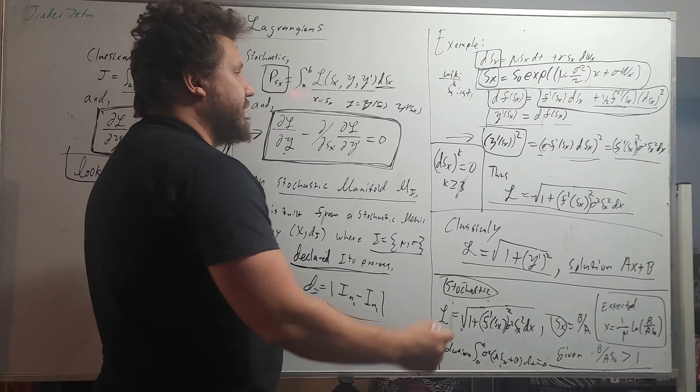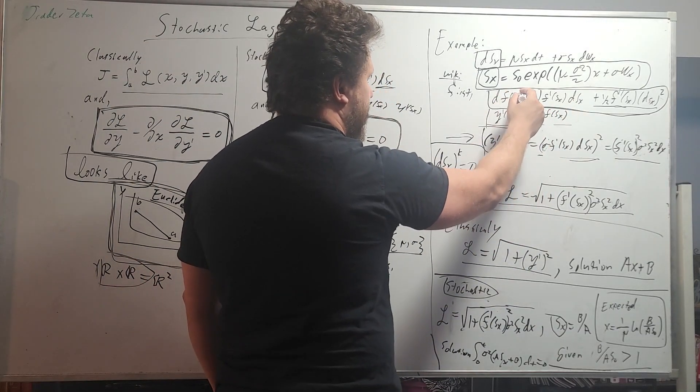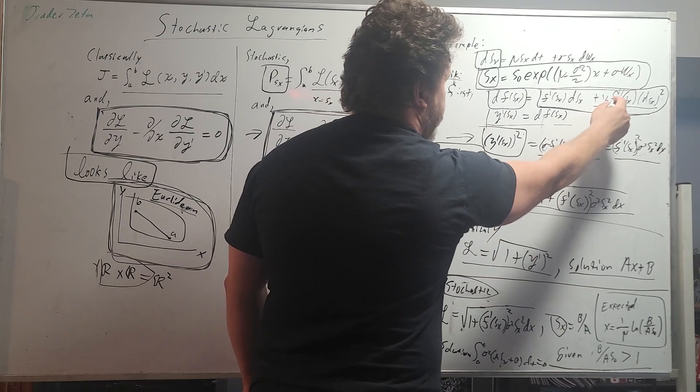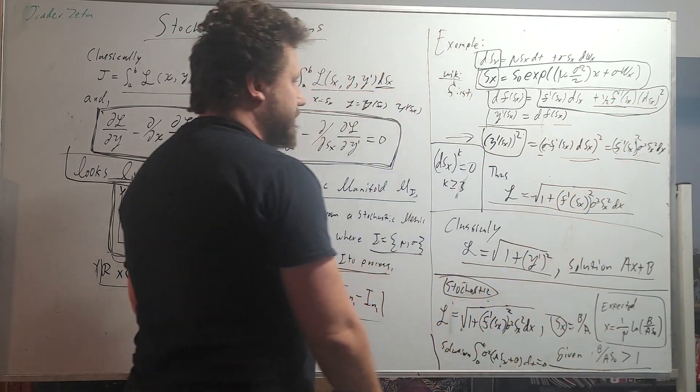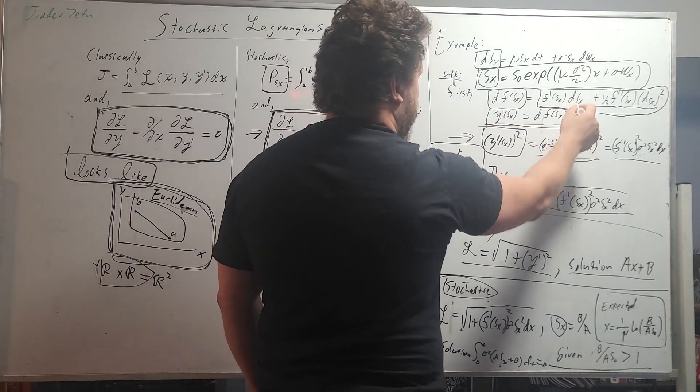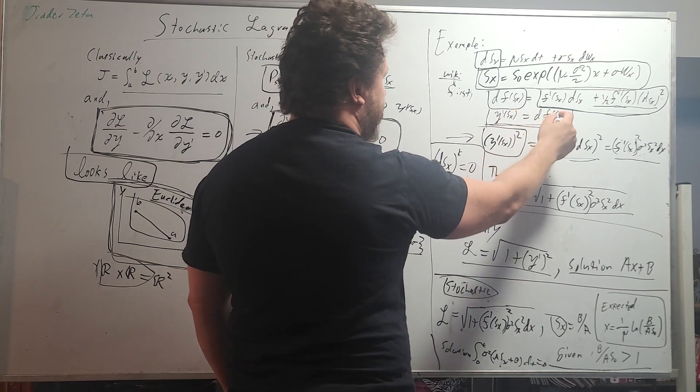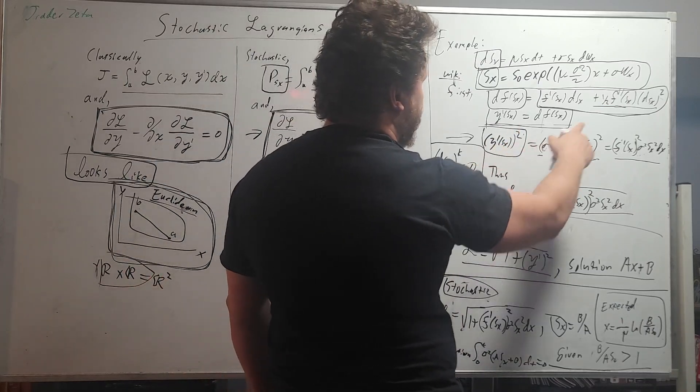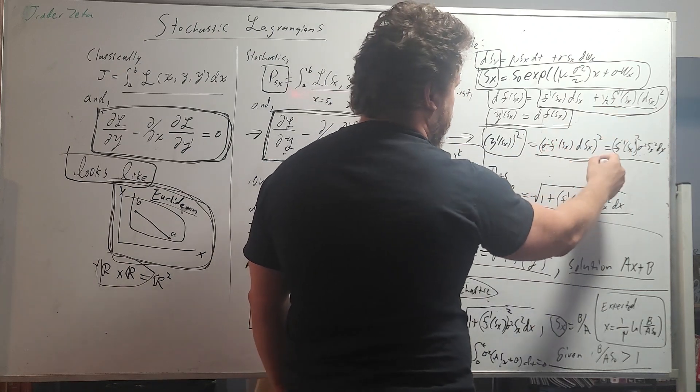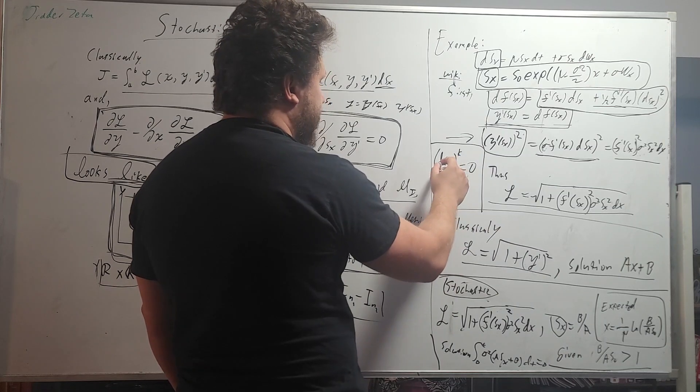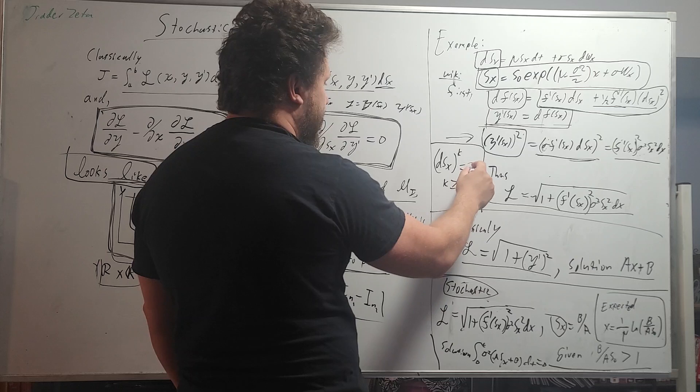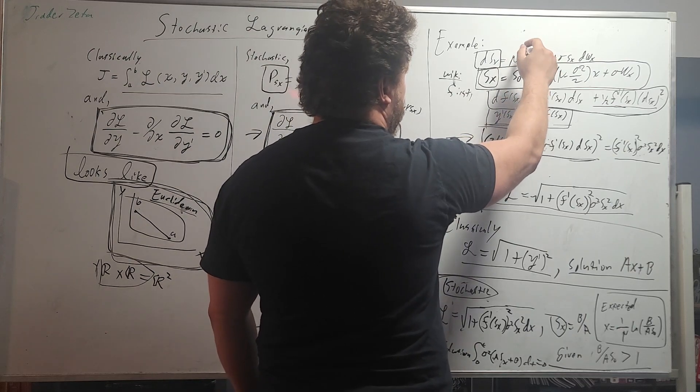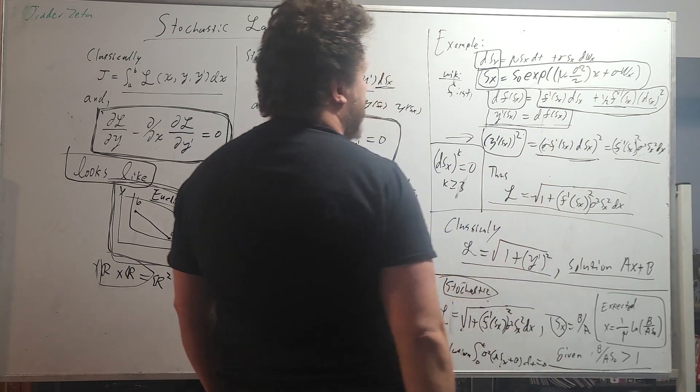Now to remind you in stochastic calculus, we have quadratic variation. So the derivative of a function with a stochastic process equals f prime sx dsx plus one half f double prime sx dsx squared. In our general case, we're going to set y prime of sx equal to df sx. So we're going to square it, and when we square it, these terms go away, and all we're left with is this. And the reason for that is because dsx raised to the k equals 0 for k greater than or equal to 3.